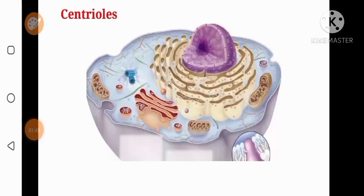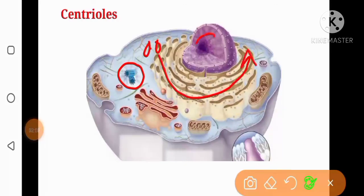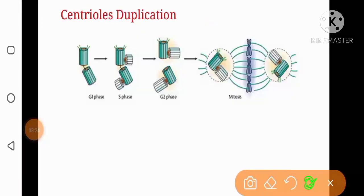In this diagram you can see a pair of centrioles in the cytoplasm. Just before cell division this pair duplicates, another pair is formed, and that pair migrates towards the opposite side of the nucleus. The pair duplicates during the S phase of the cell cycle and two pairs are formed.